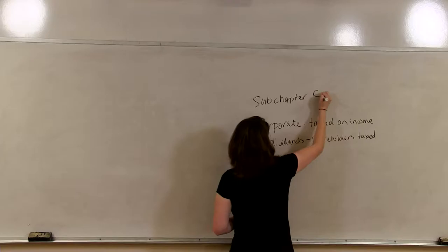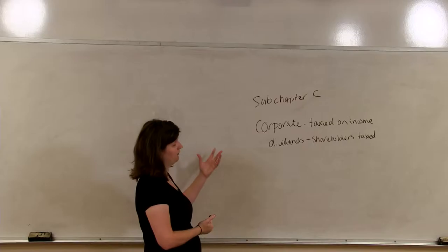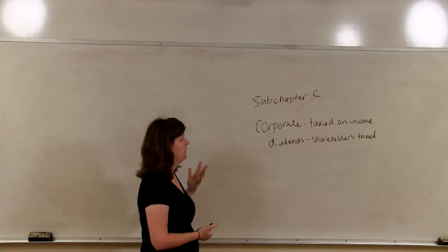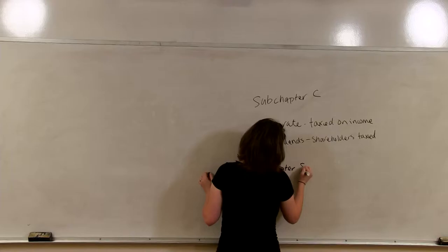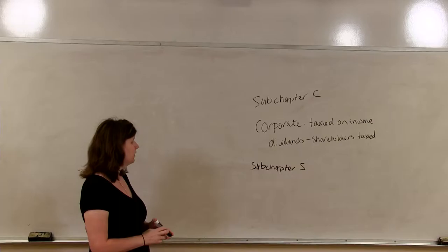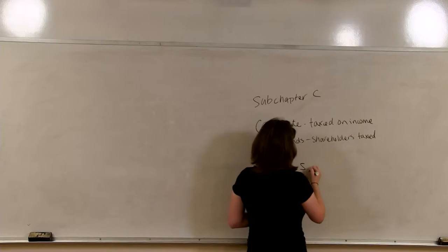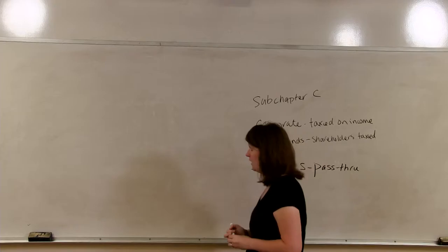So, we essentially have taxed twice. Let's compare this to a partnership, or to a pass-through entity. You may have heard, sub-chapter C. Sub-chapter C is a sub-chapter of the Internal Revenue Code that deals with C Corps, where we will be spending the majority of our time this semester. There is another type of corporations that are found under sub-chapter S. We will discuss these at the very end of the semester. These are called S corporations, and they are passed-through entities, much like a partnership.